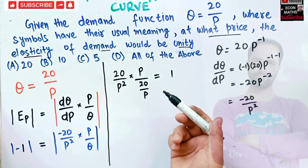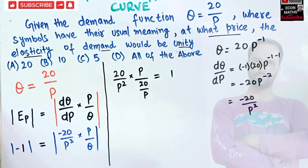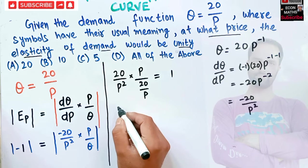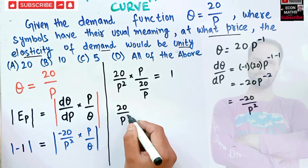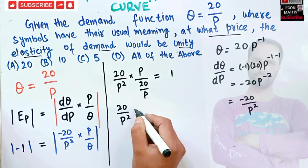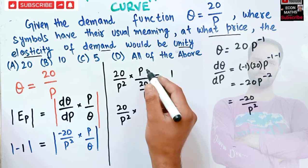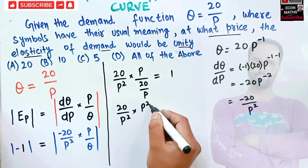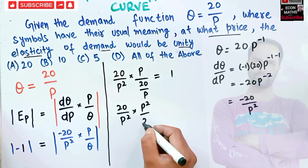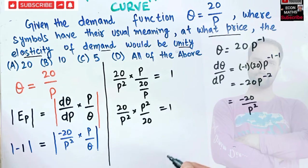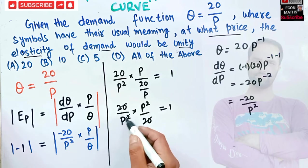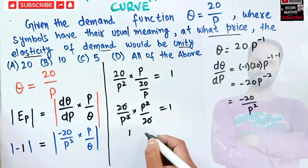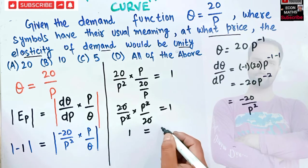We have 20 upon P squared multiplied by P squared upon 20, which should equal one. The 20 and 20 cancel, and P squared and P squared cancel, leaving us with one equals one. This is always true regardless of the value of P.